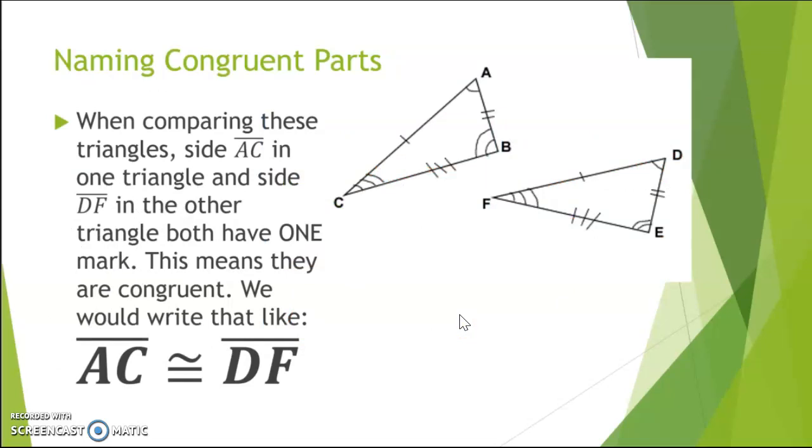Next, we're going to work on naming some congruent parts of these triangles. So there's a lot of markings going on on these triangles. This first triangle we could call triangle ABC. And the second triangle, if we wanted to name it the same, we could call it DEF. And you'll notice I went in order from one marking in the angle, to two markings in the angle, to three markings in the angle.